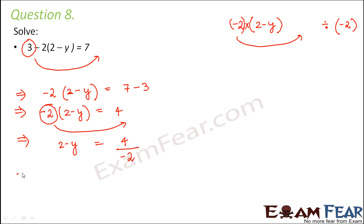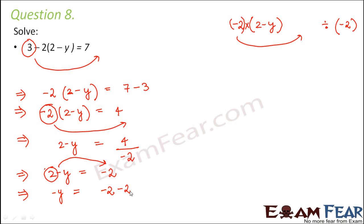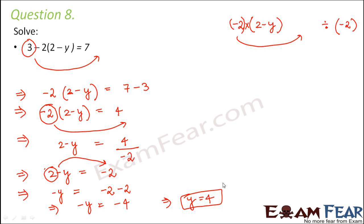4 divided by minus 2 equals minus 2. So we have 2 minus y equals minus 2. Shifting the 2 to the right, it becomes minus 2 minus 2, giving minus y equals minus 4. Both sides have a negative, so y equals 4. Multiplying both sides by minus 1 confirms y equals 4 is the solution.